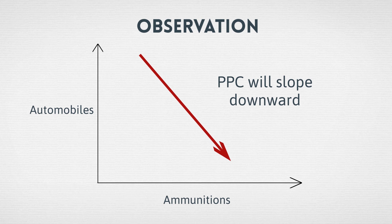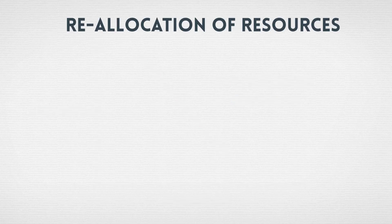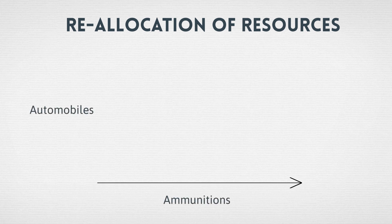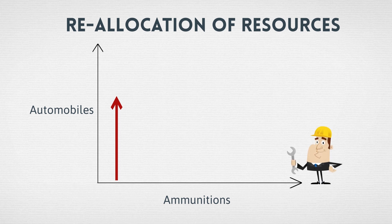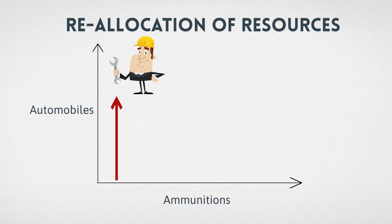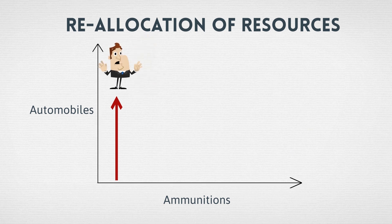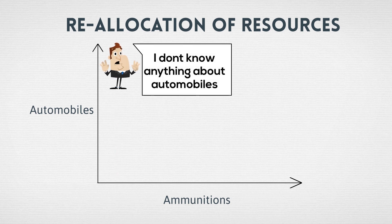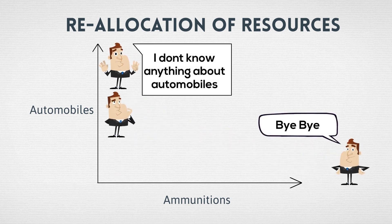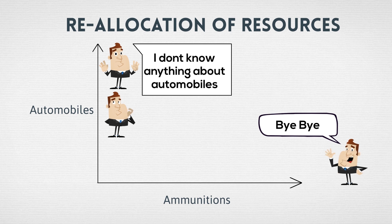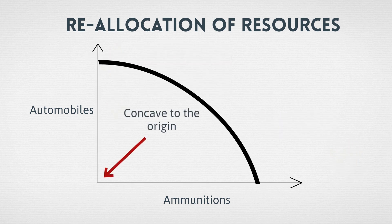The second observation is that if production of automobiles increases, resources or laborers have to be relocated from the production of ammunitions to the production of automobiles. In this process, there may be the problem of adjustment or adaptability, and therefore more and more laborers will have to be relocated from the ammunitions industry to the automobile industry. In other words, the opportunity cost increases. This will result in a curve that is concave to the origin.